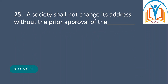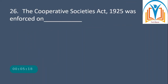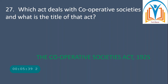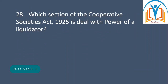Next question: a society shall not change its address without the prior approval of the registrar. Next question: the Cooperative Societies Act 1925 was enforced on 4th December 1925. Question number 27: which act deals with cooperative societies? That is the Cooperative Societies Act 1925.